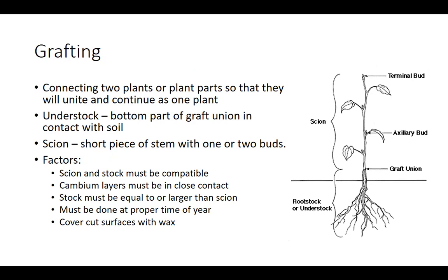Grafting is the process of connecting two plants or plant parts so that they will unite and continue to grow as one plant. One of the two plants being grafted must serve as the understock, which is the bottom part of the graft union that is in contact with the soil. The other component of the graft is the scion, which is a short piece of stem with one or two buds. For grafting to be successful, the scion and understock must be compatible, and the cambium layers must be in close contact. The understock must be equal to or larger than the scion's diameter, and grafting must be done at the proper time of year so that the scion buds are dormant but can still produce callous tissue. Immediately after grafting, all cut surfaces must be thoroughly covered with grafting wax — a water-repellent material composed of beeswax, resin, and tallow — to prevent desiccation.